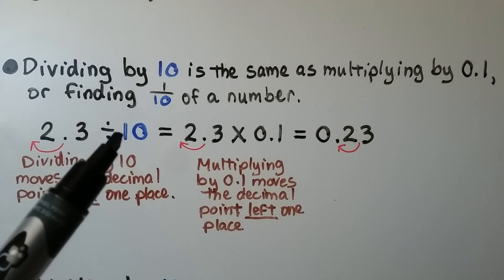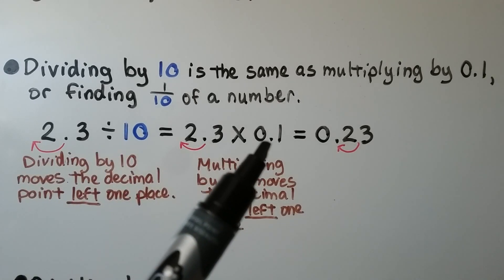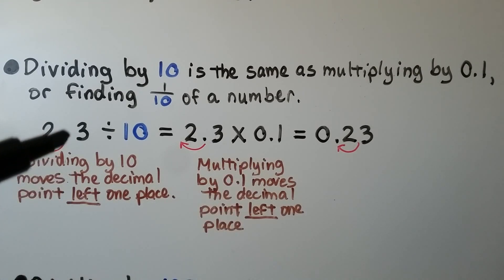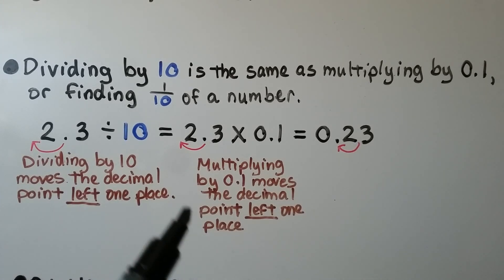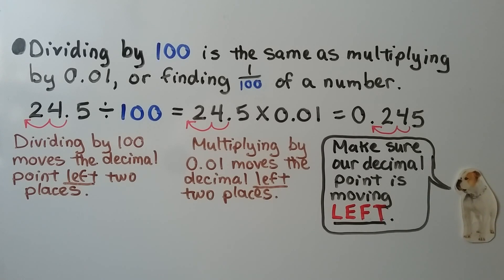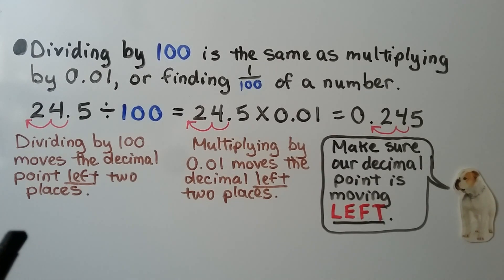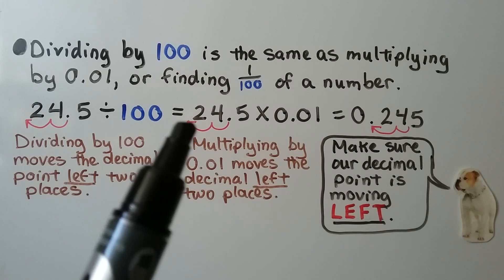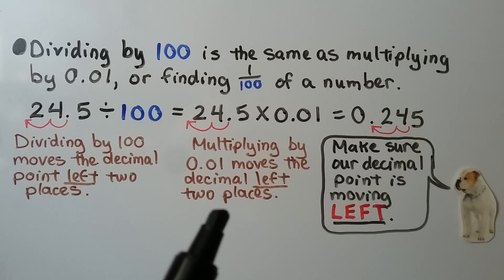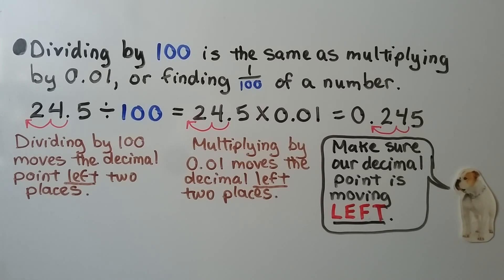2 and 3 tenths divided by 10 equals 2 and 3 tenths times one-tenth. Dividing by 10 moves the decimal point left one place, so we have 23 hundredths. Multiplying by one-tenth also moves the decimal point one place left — it's 23 hundredths. Dividing by 100 is the same as multiplying by one-hundredth. We have 24 and 5 tenths divided by 100 — that moves the decimal point left two places, and it's also equal to 24 and 5 tenths times one-hundredth. They're both equal to 245 thousandths. Make sure the decimal point is moving left.